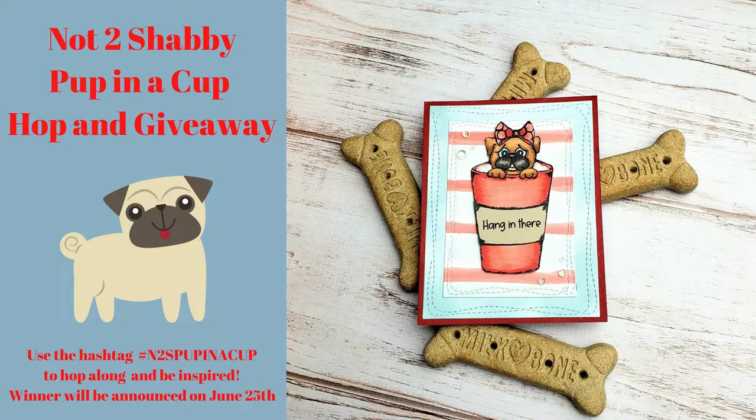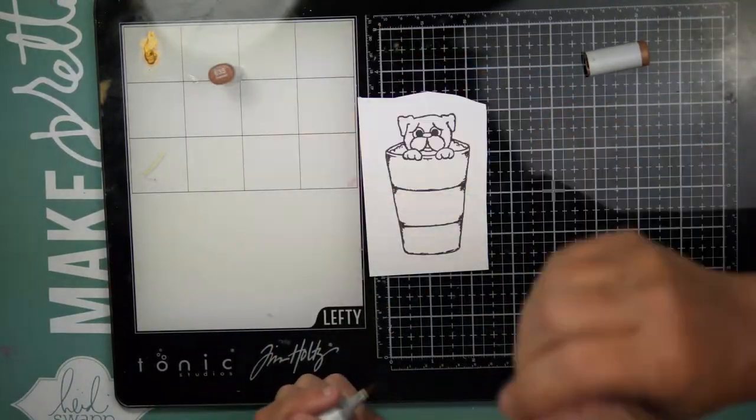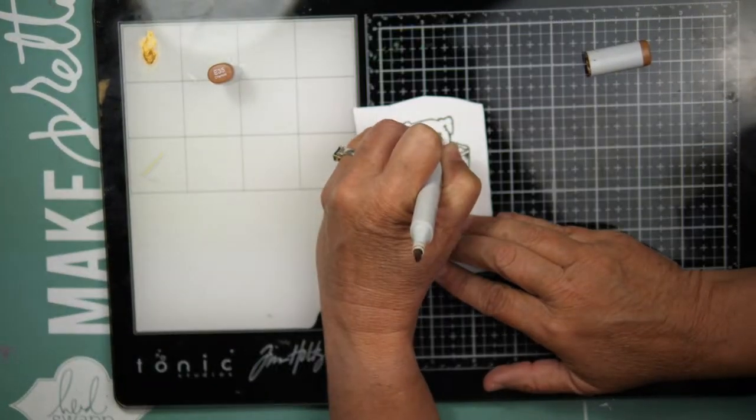Hello everyone, welcome to the Not Too Shabby Pup in a Cup YouTube Inspiration Hop. My name is Marla and I'm with Mad About Cards and Crafts. I'm going to start by getting right into the coloring. I did stamp this cute little image out using Gina K Designs Jet Black Amalgam ink.